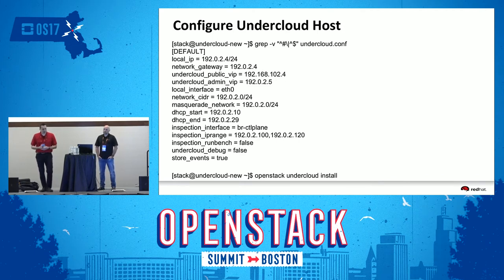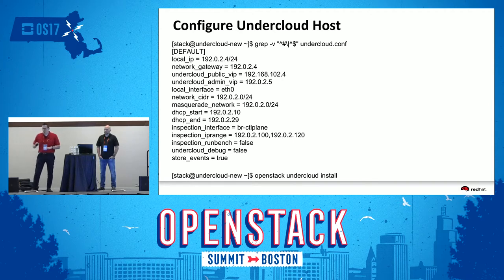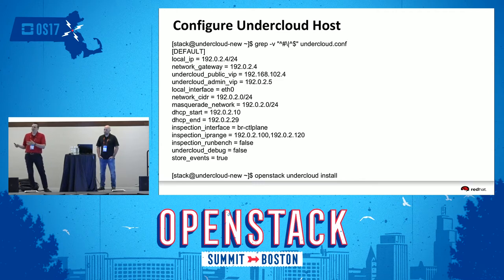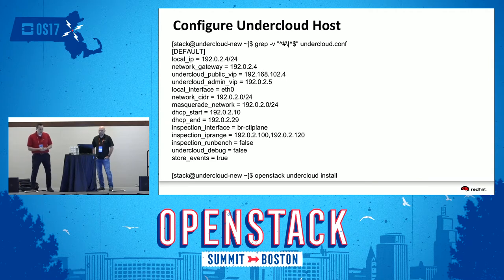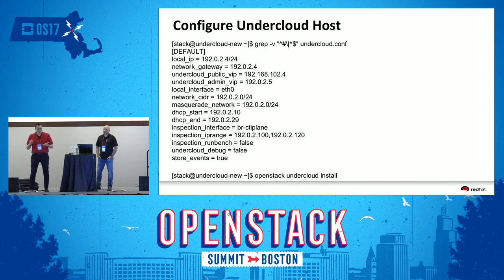How do you deploy the undercloud? There's one configuration file where you specify all the DHCP ranges, IP addresses for both undercloud and overcloud, and inspection ranges. There are some extra parameters that help you monitor or run Tempest to validate your deployment. Then all you have to do is type 'openstack undercloud install' and you have the undercloud up and running.